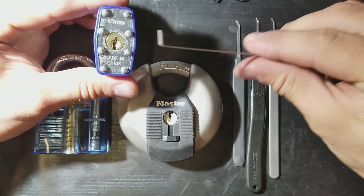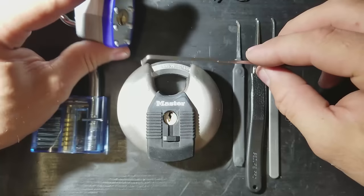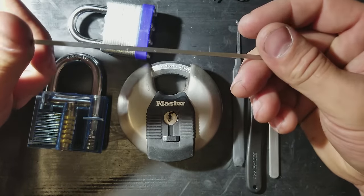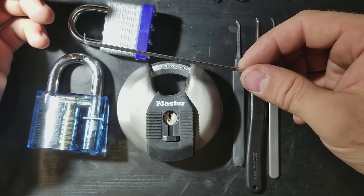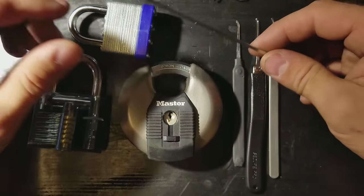And most lock picking torque is achieved with something called a tension wrench. Tension wrench sounds really magical, but this is just a piece of strip steel from a windshield wiper. Now, do you need to run out and get yourself a windshield wiper in order to become a lock picker? Absolutely not.